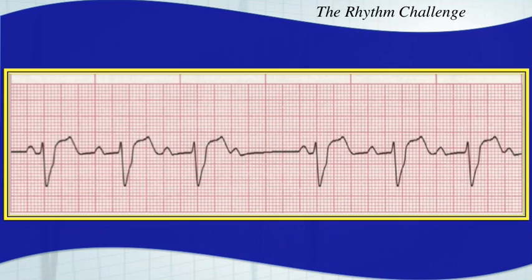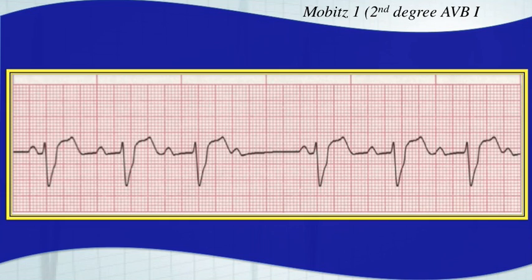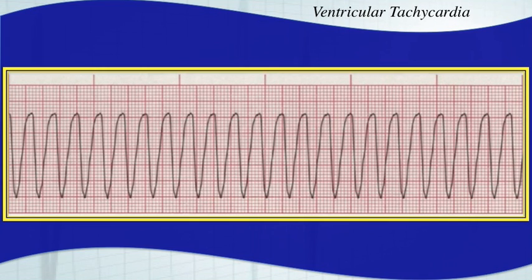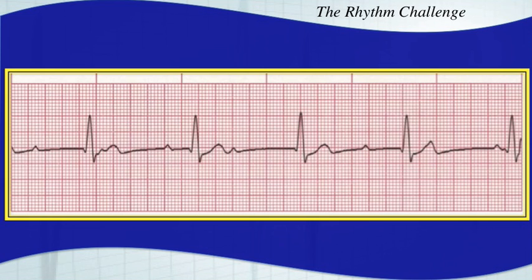This is a Mobitz I — a second degree AV block type I. You have that going, going, gone pattern. And this next one is a monomorphic ventricular tachycardia. They're all the same shape — very fast, very wide. You should be able to identify that instantly.